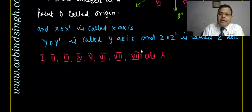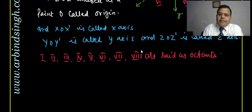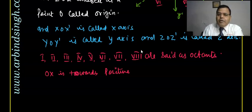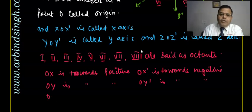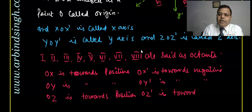Now regarding sign conventions: OX is towards the positive side and OX-dash is towards the negative side. Similarly, OY is the positive side and OY-dash is towards the negative. OZ is towards positive and OZ-dash is towards negative. The coordinate quadrant is described accordingly.